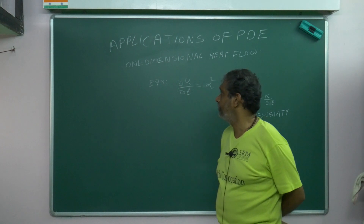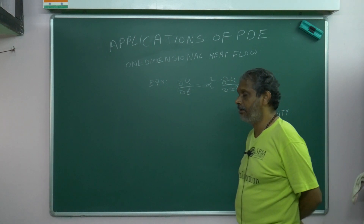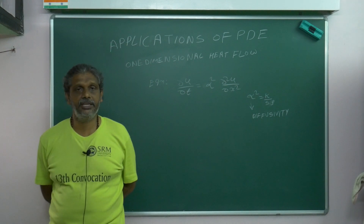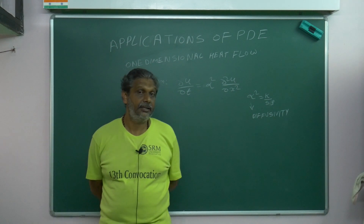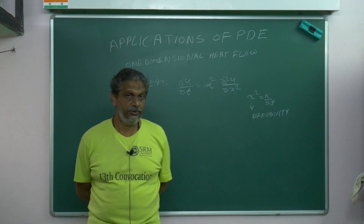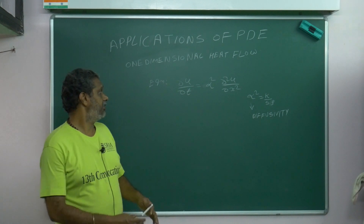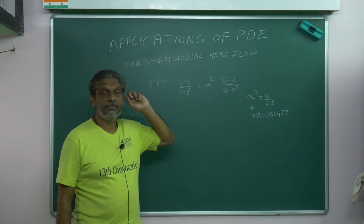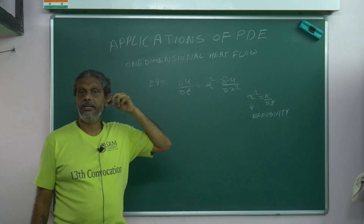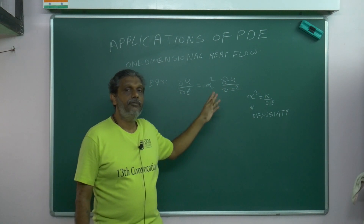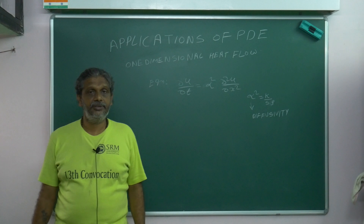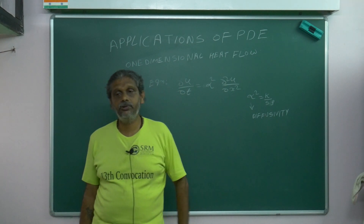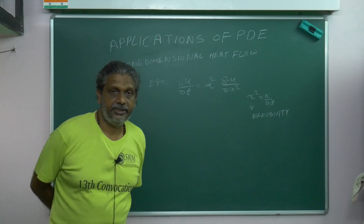Now, one-dimensional heat flow. Consider a thin rod where the width is negligible, in the flow of heat. After deriving the equation, we get: ∂u/∂t = α² · ∂²u/∂x², where α² = k / (s·ρ). Here α is the material diffusivity, k is the thermal conductivity, s is the specific heat, and ρ is the density of the material.